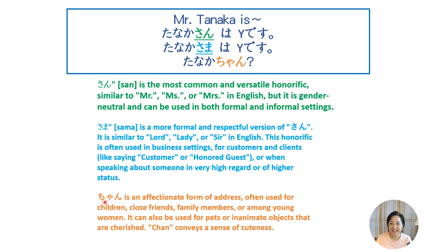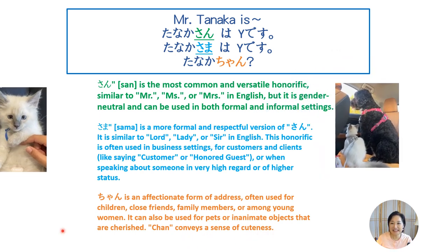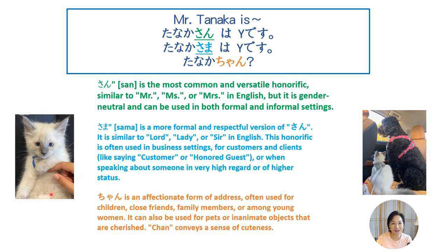There's another version — chan — that we use for small children, close friends, family members, or pets. Chan conveys a sense of cuteness. I have a pet cat named Q, and I call him Q-chan. I have a pet dog named Olive, and I call her O-chan. My uncles and aunt still call me Moyo-chan today, because of course I was once a cute little girl.